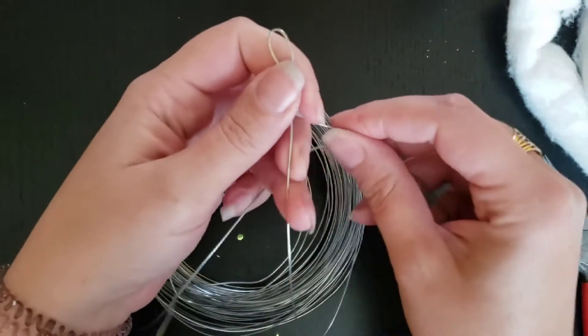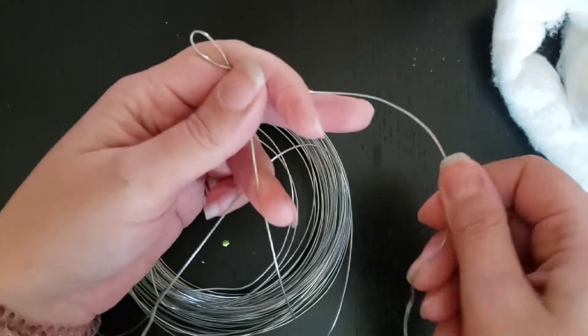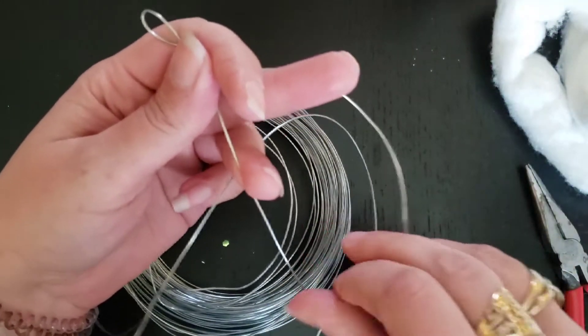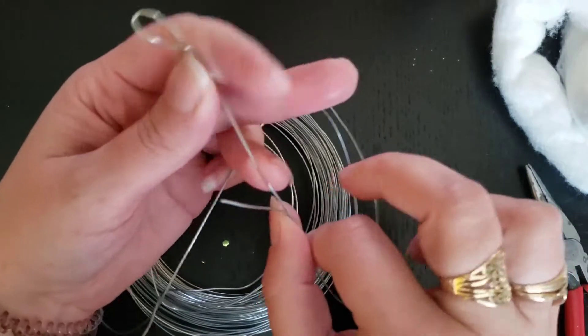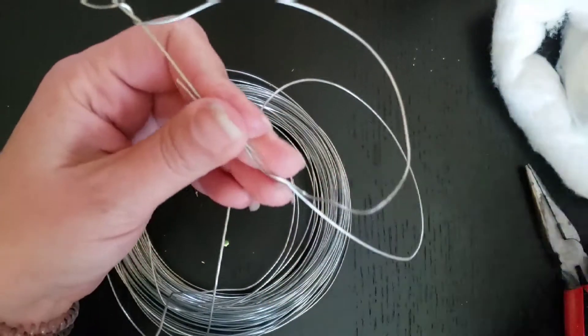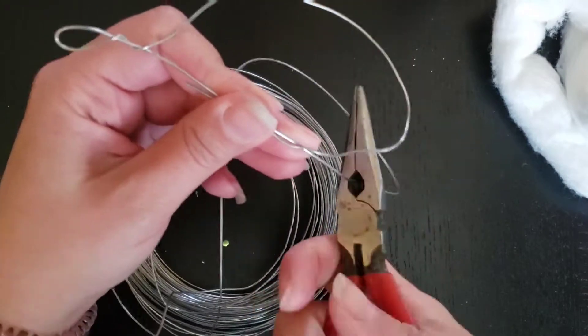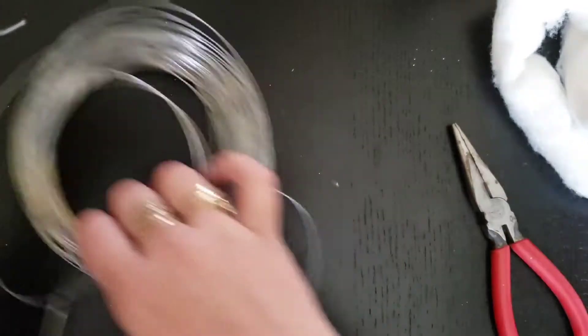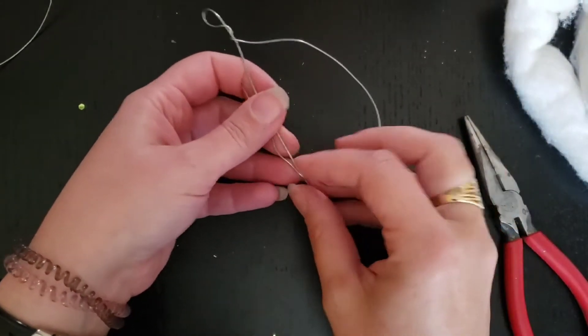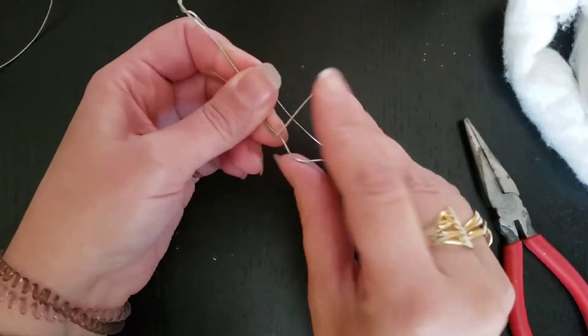We're going to make a nice little loop, and then you're just going to wrap it around to form a circle, and then we're just going to cut that off.